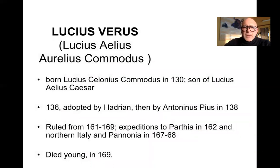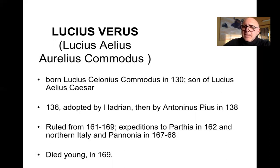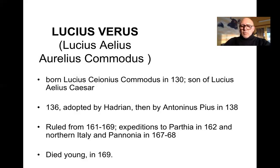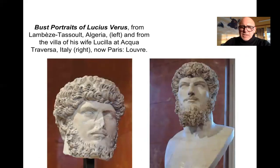Since Lucius had a much shorter reign and died earlier than Marcus Aurelius, let's discuss him first. Lucius Aurelius Commodus was born in the year 130. He was the son of Lucius Aurelius Caesar and the nephew of Faustina the Elder. In 136 he was adopted by Hadrian, and then by Antoninus Pius in 138. He ruled from 161 to 169 — a very short reign. He took some expeditions to Parthia in 162 and traveled in northern Italy and Pannonia between 167 and 168. He died young, presumably of natural causes, in the year 169. Here are marvelous portraits of him as a young man — a heroic figure wearing a beard, much like his father and his imperial grandfather Hadrian before him.